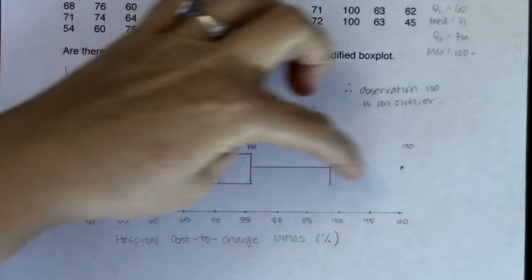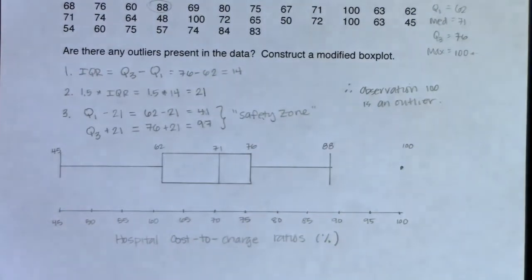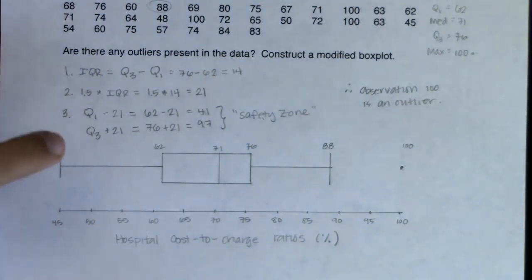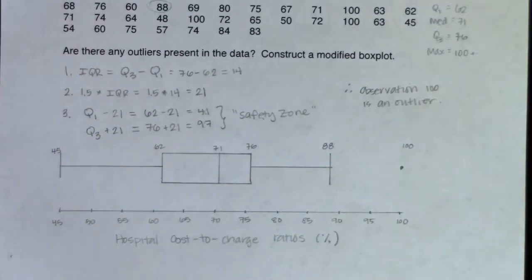We're showing the outliers present, whiskering out to the highest non-outlier. If I had had an outlier on the lower end, I would have had a dot over there and whiskered out to the lowest non-outlier.